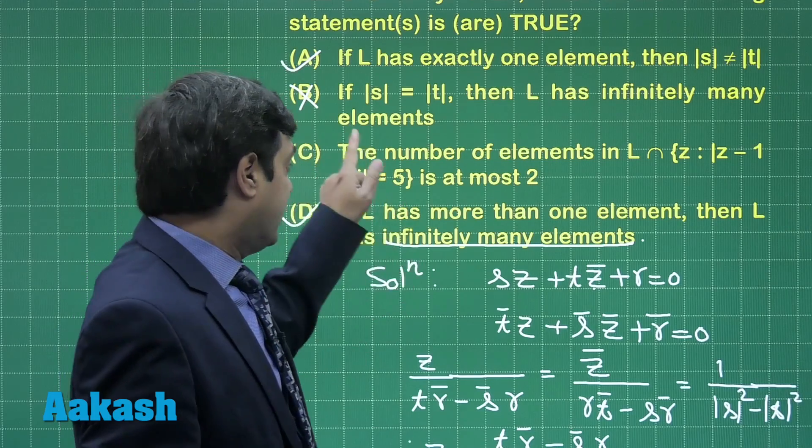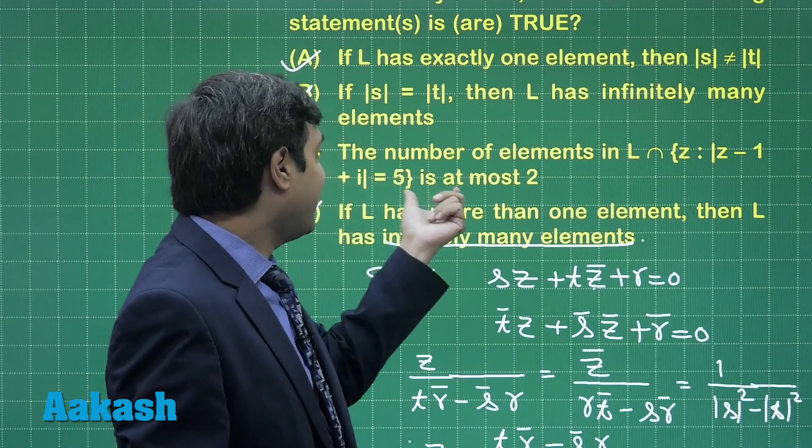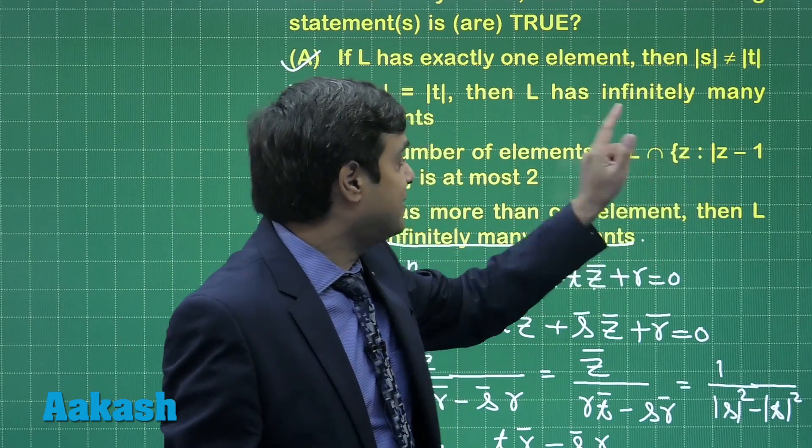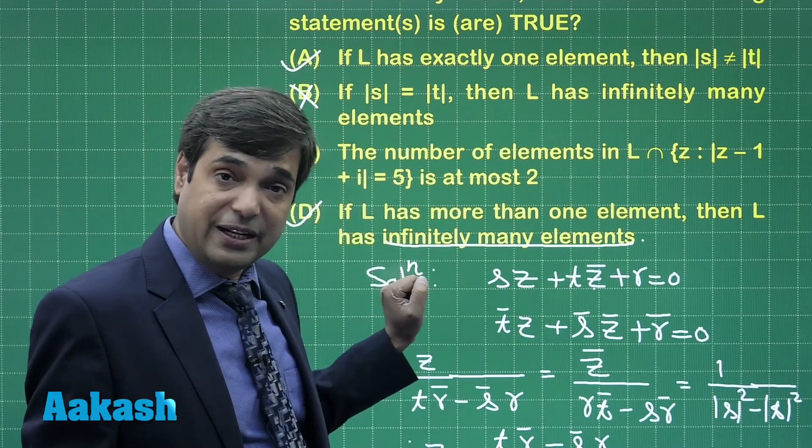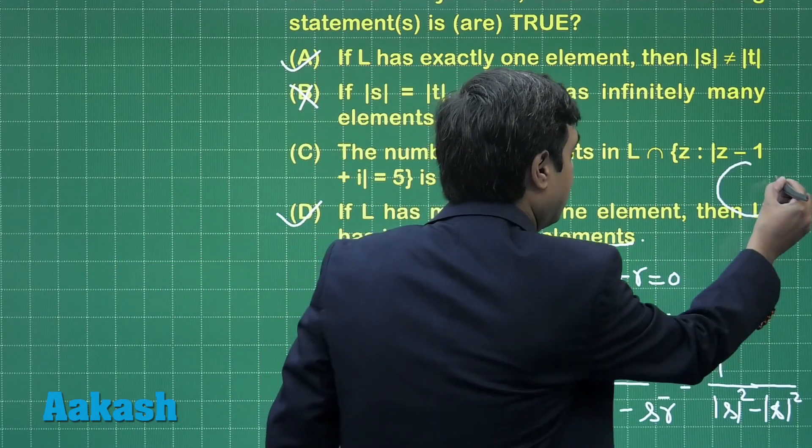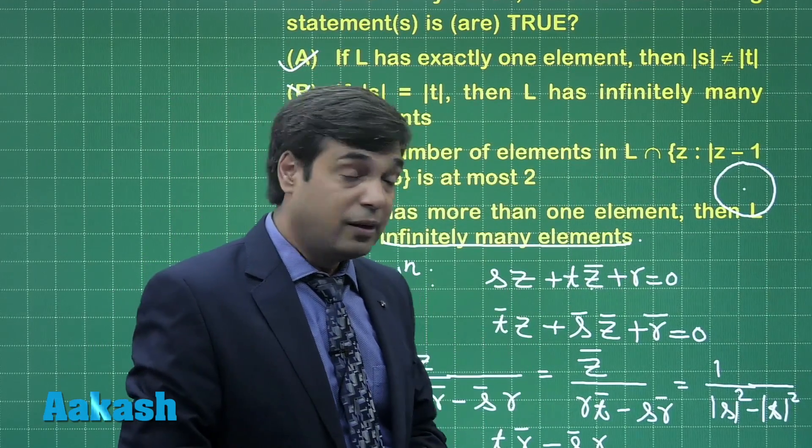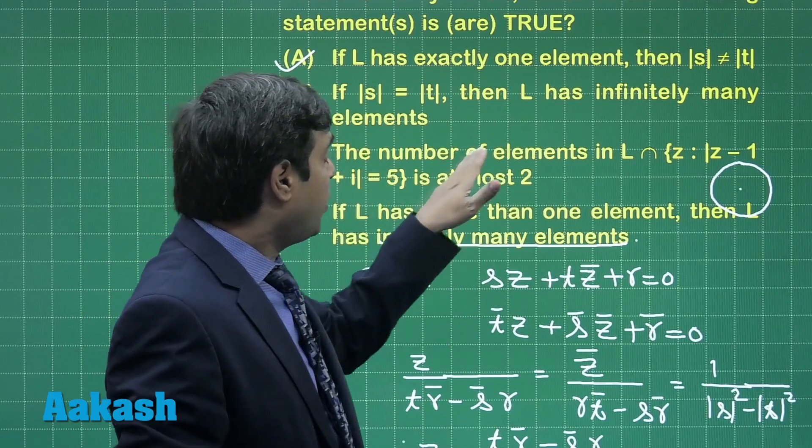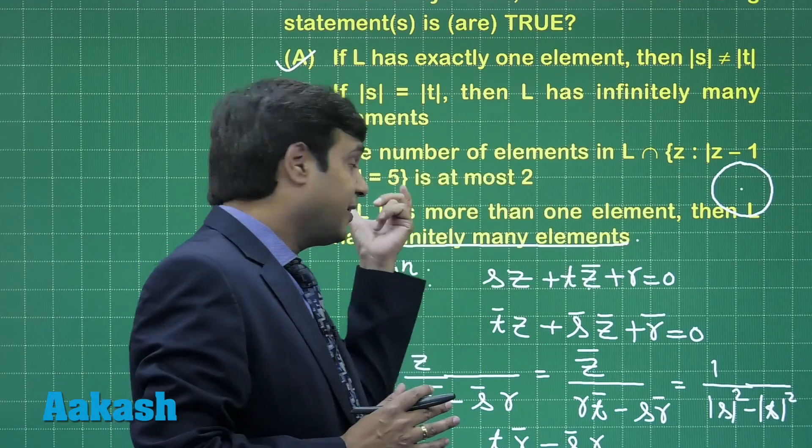Option C: the number of elements in L intersection another set given is at most 2. What is this term? |z minus 1 plus iota| equals 5. What is it representing? It is representing a circle, centered at 1, minus 1 and radius 5. Now they are saying the number of elements in L: how many elements are possible in L intersection this one?